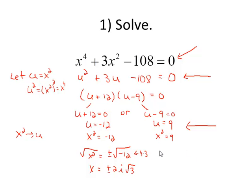plus or minus 2i root 3. For the other equation, square root of x squared equals plus or minus the square root of 9. And that leaves us with x equals plus or minus 3. So our solution set contains four solutions. Let me write it up here in the top left. I have 2i root 3, negative 2i root 3, 3 and negative 3 in some order.